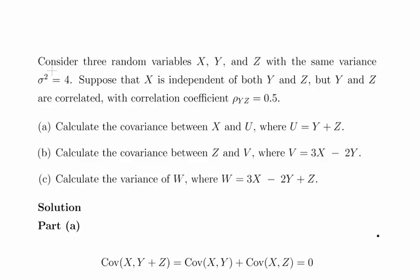In this presentation we're going to look at random variables. We have three random variables here: x, y, and z. This presentation is about calculations concerning variance and covariance of random variables. x, y, and z have the same variance, sigma squared equal to 4.